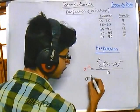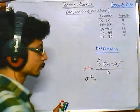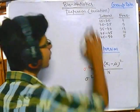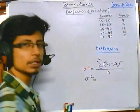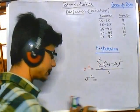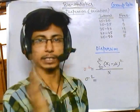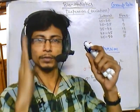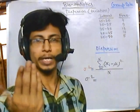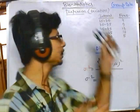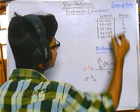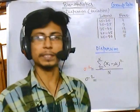Let's write the formula required for group data. The formula for dispersion, sigma squared, applies when we consider this as a whole population. The idea is the same — dispersion means the deviation of data values from the mean. For population, the mean is mu. We subtract mu from each data value, but here instead of a single specific data point we have a range of data.